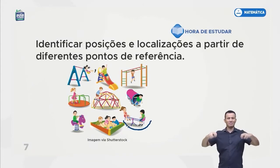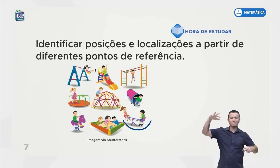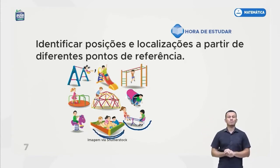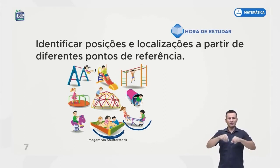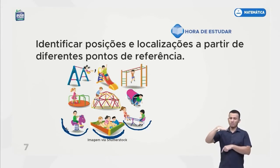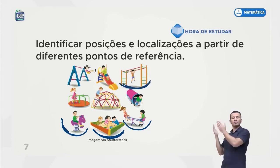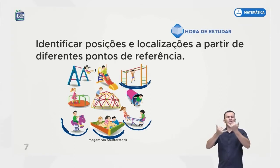Olha aqui na gangorra — é legal brincar de gangorra! O coleguinha sobe, o outro desce. Quando o coleguinha está embaixo, o outro está em cima. E aí quando o coleguinha que está em cima desce, o de baixo vai pra cima. Esses três amiguinhos brincando na caixa de areia, eles estão no chão, estão embaixo. Esse coleguinha aqui, brincando no cavalinho, ele está em cima do cavalinho. E esse outro, ele está pendurado — quando eu estou pendurado, eu estou em cima.